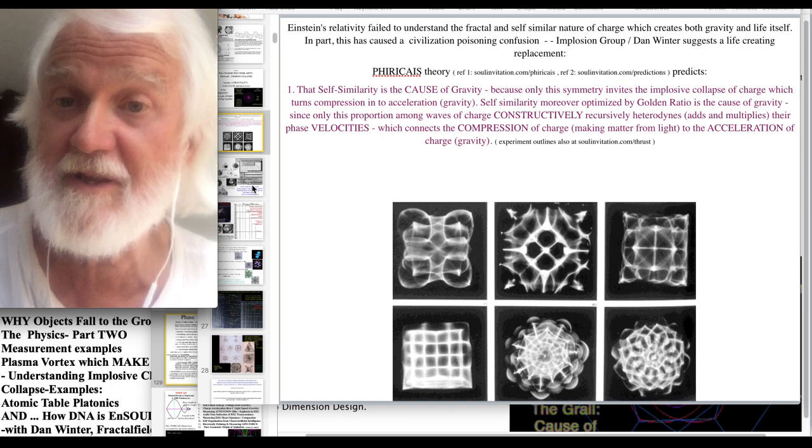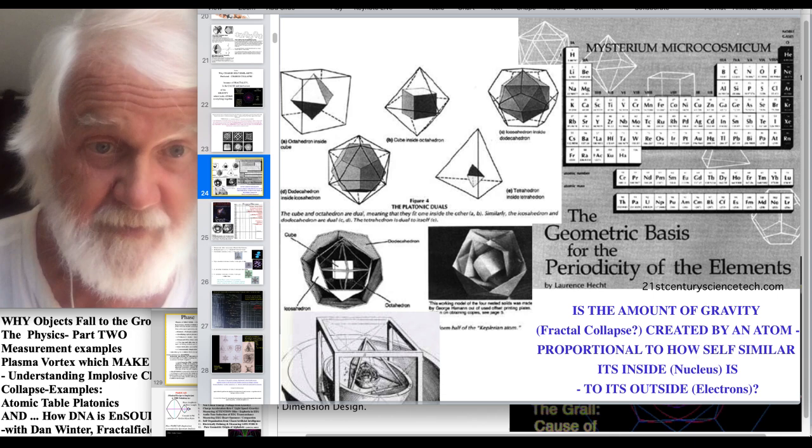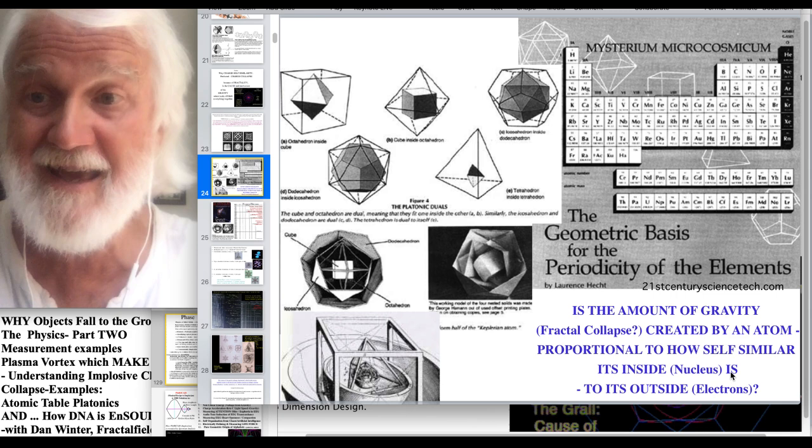So, the primary source for this part of the conversation is from the geometric periodicity of the elements, from Lawrence Hecht, 21st Century Magazine. This is famous. Now this whole section, the visuals for this section on the platonic implosive charge collapse of the atomic table, is all at goldenmean.info/creation. And you'll see all these images there.